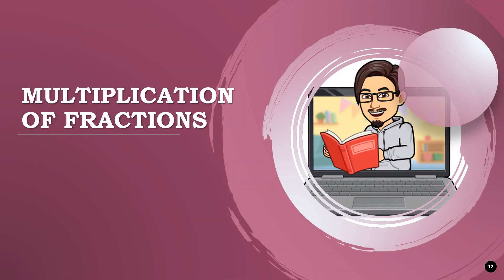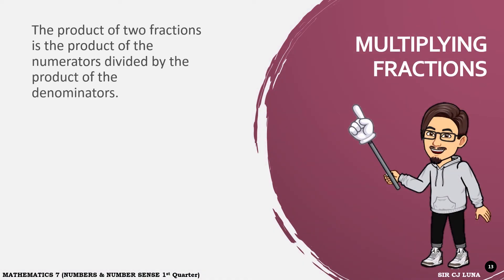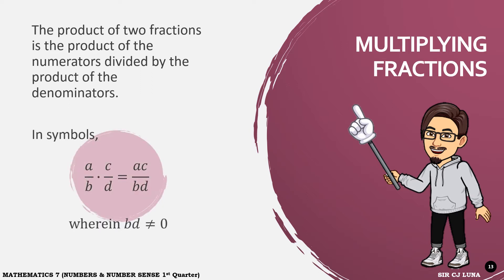Proceed tayo sa multiplication of fractions. The product of 2 fractions is the product of the numerators divided by the product of the denominators. In symbols, we have a over b times c over d is equal to ac over bd. Wherein bd should not be equal to 0.